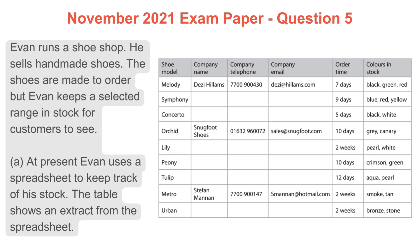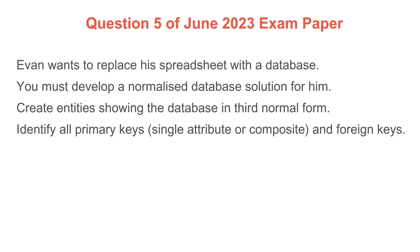This is another question from the November 2021 exam paper, question number five. Evan runs a shoe shop — he sells handmade shoes made to order, but keeps a selected range in stock for customers to see. At present, Evan uses a spreadsheet to keep track of his stock, and the table shows an extract from that spreadsheet. Evan wants to replace his spreadsheet with a database. You must develop a normalized database solution — create entities showing the database in third normal form, identify all primary keys (single attribute or composite) and foreign keys. I won't run through each step as I did for the previous question, but I will discuss the things to consider and then show the final entity relationship diagram in third normal form.